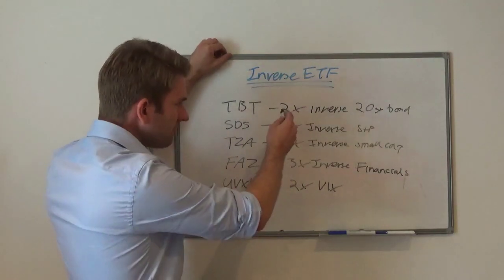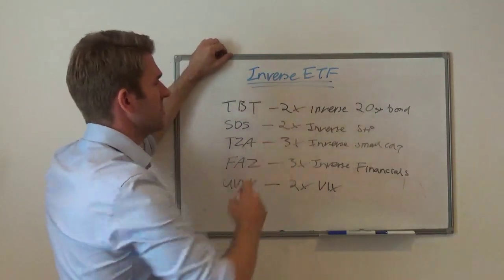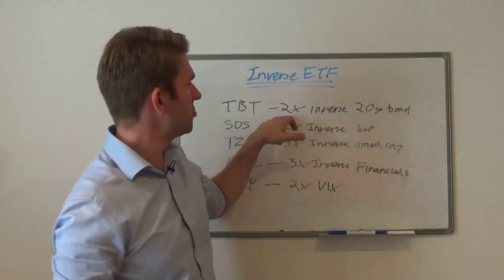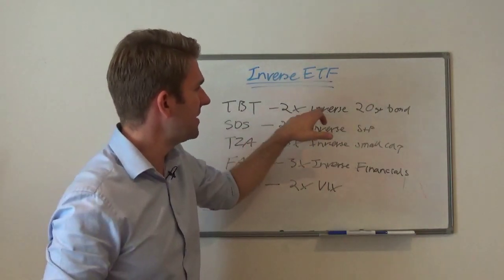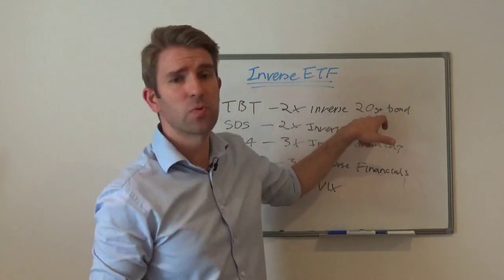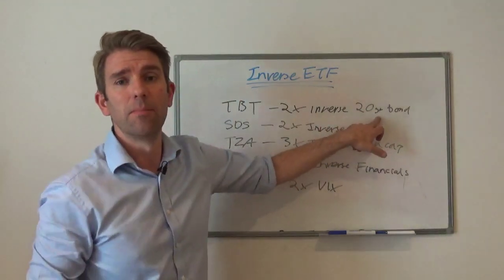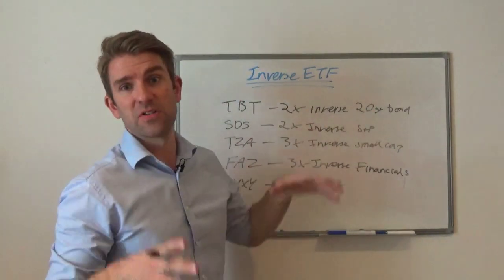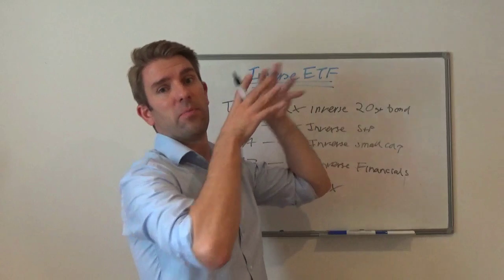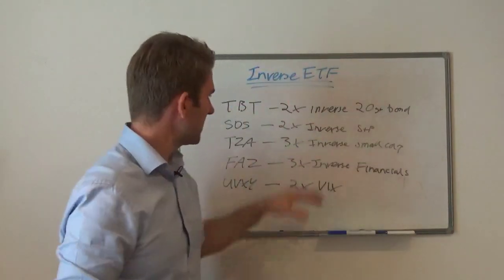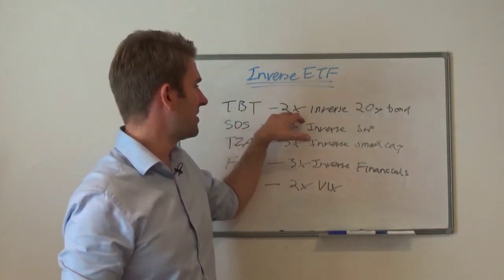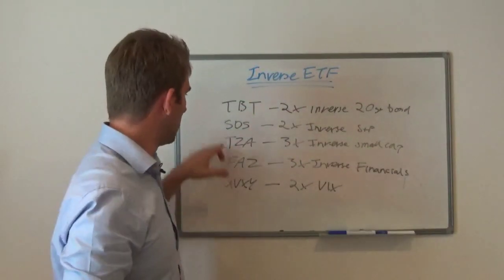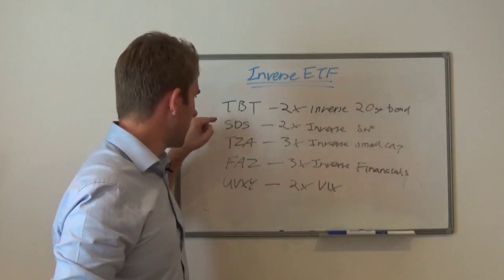Let's look at some examples. We've got TBT, which is the leveraged one — it aims to do twice the inverse of the 20-year bond. So the bond goes up 1%, this thing is going to go down 2%. It's an inverse play on bonds.